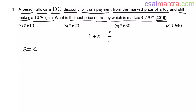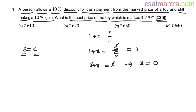Let's pay a little more attention to this formula. Say selling price S is equal to cost price C. The formula 1 plus x equals S by C becomes 1 plus x equals 1, so x equals 0 — meaning there is no profit and no loss. When selling price equals cost price you have no profit and no loss. Now say selling price is greater than cost price, meaning you have a profit.